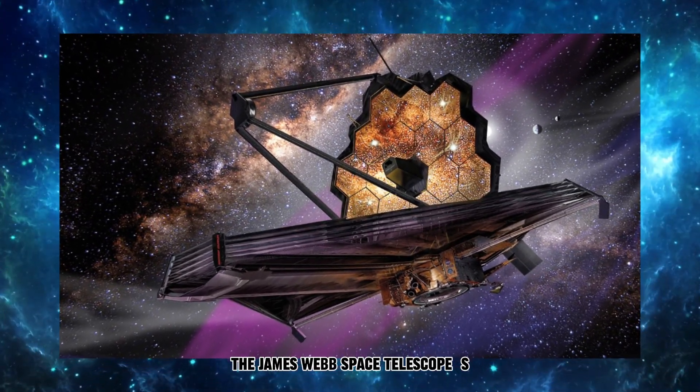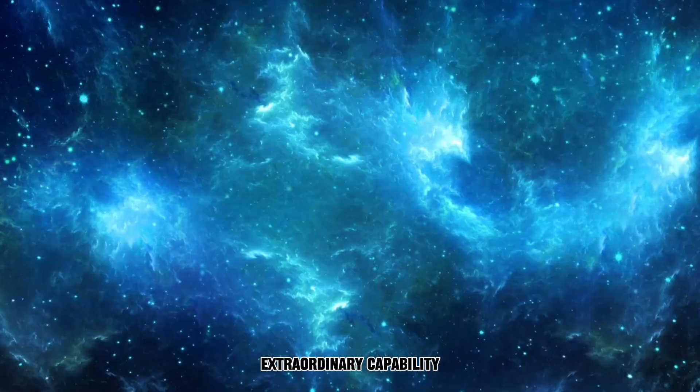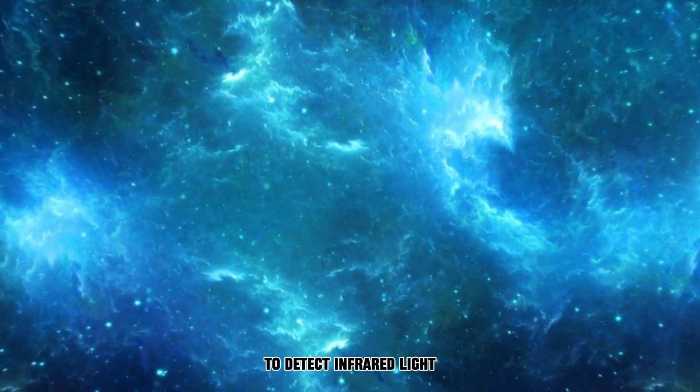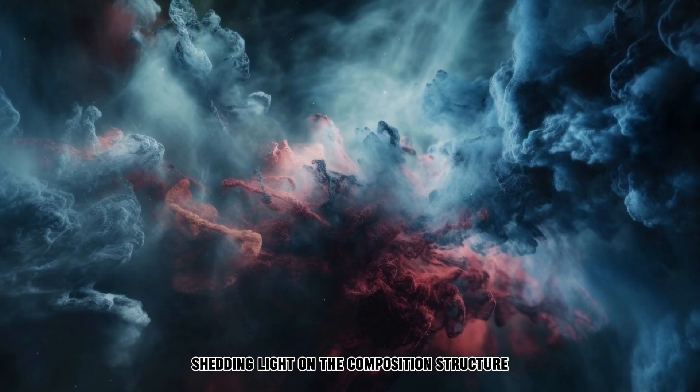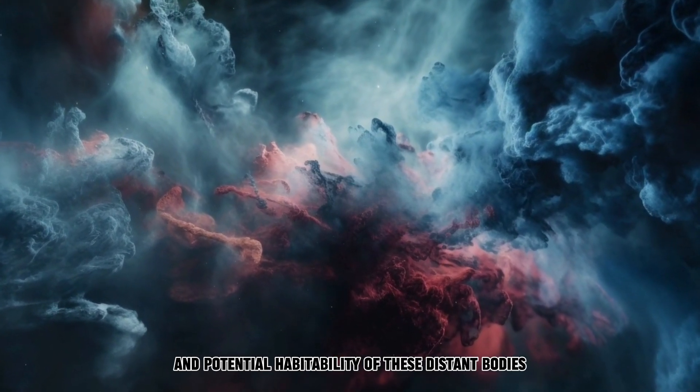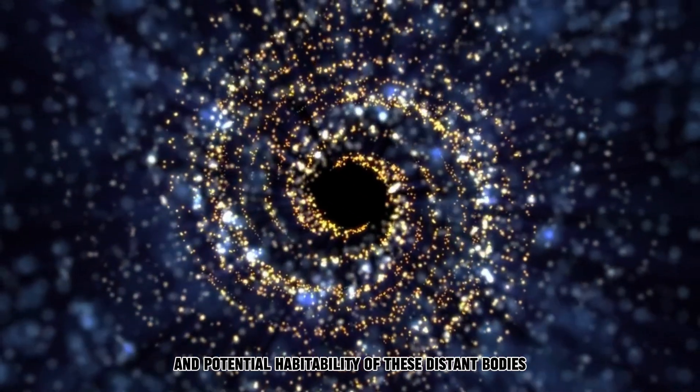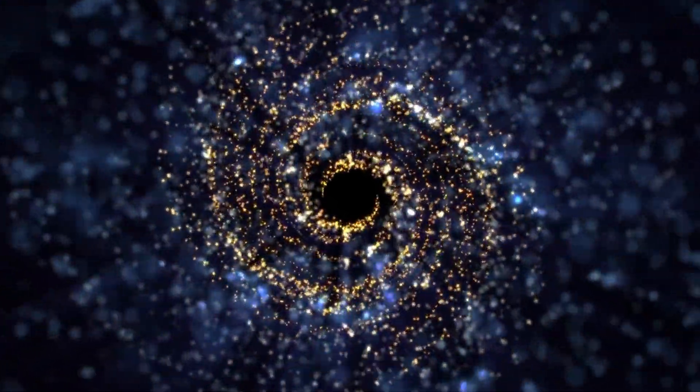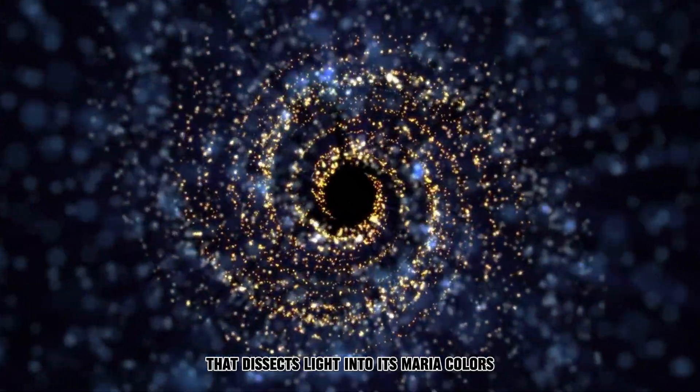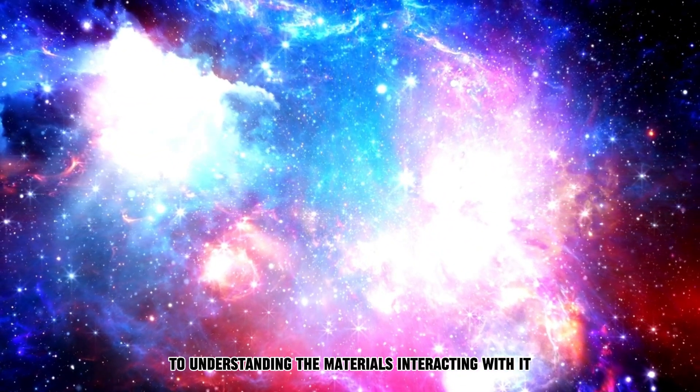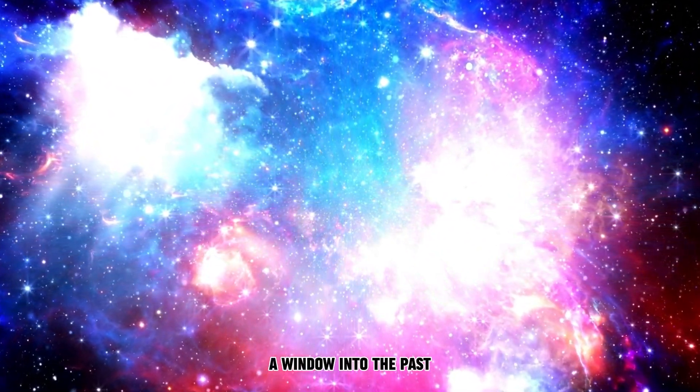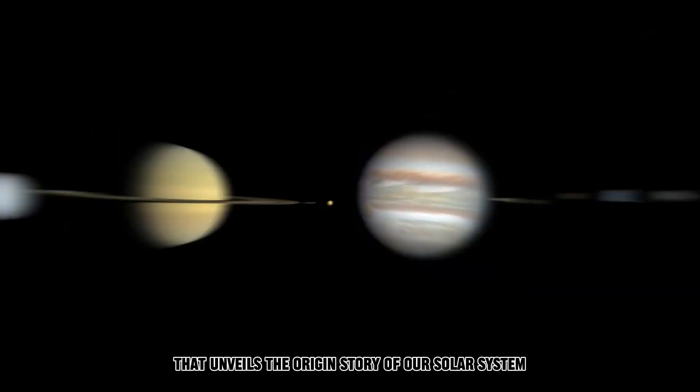The James Webb Space Telescope's extraordinary capability to detect infrared light enables the unmasking of these hidden secrets, shedding light on the composition, structure, and potential habitability of these distant bodies. Spectroscopy, a powerful technique that dissects light into its myriad colors, provides a key to understanding the materials interacting with it, a window into the past that unveils the origin story of our solar system.